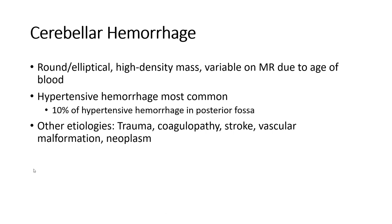The second differential is cerebral hemorrhage. It typically appears as an ovoid or elliptical high-density mass on CT, with variable signal depending on age of the hemorrhage. The most common cause is hypertensive hemorrhage, accounting for about 10% in the posterior fossa. Other etiologies include trauma, coagulopathy, stroke, vascular malformation, and neoplasm.